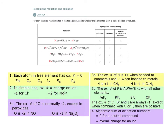Let's look at this nitrogen atom in the first reaction. According to our rules, we can assign an oxidation number of zero on the left side. On the right side of this reaction, we can assign an oxidation number of minus three. Oxidation is the loss of negatively charged electrons, and reduction is defined as the gain of negatively charged electrons. We can guess what happened to this nitrogen atom.